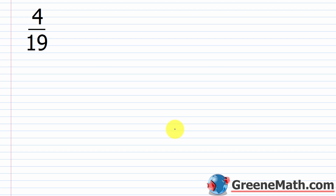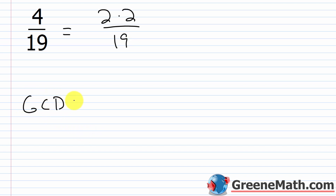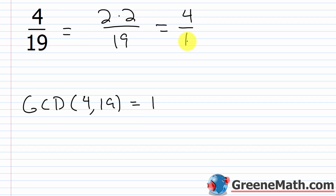Let's look at 4/19. We know 4 = 2 × 2 and 19 is prime. The greatest common factor of 4 and 19 is 1. When the GCF is 1, you can't simplify the fraction any further, so the answer is just 4/19.